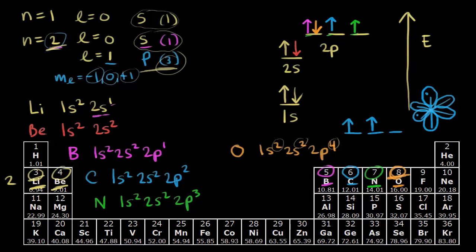Moving on to fluorine, which has nine total electrons. Once again we're pairing up our spins, adding fluorine's ninth electron. The electron configuration for fluorine is one s two, two s two, two p five.